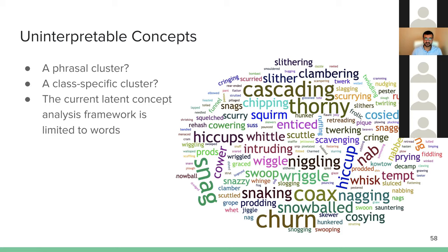Other than these compositional concepts, we also found some concepts that are uninterpretable for us at this point. For example, this cluster — maybe it's a phrasal cluster. Our current framework of latent concepts is limited to analyzing words only. It could be that at some point in higher layers the model is learning some phrasal properties useful for the objective function. I'm not saying they are completely uninterpretable, but our current methodology may be limited to understanding these uninterpretable concepts.